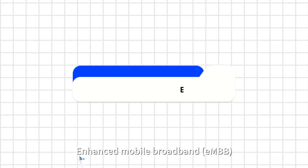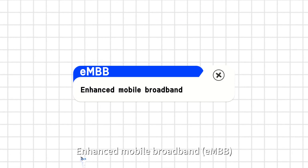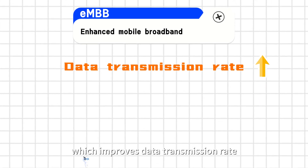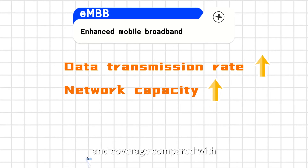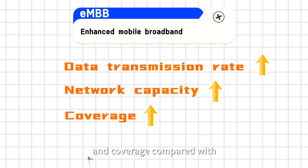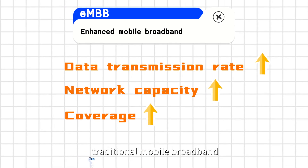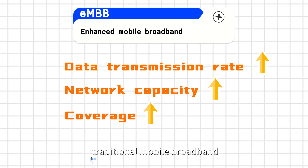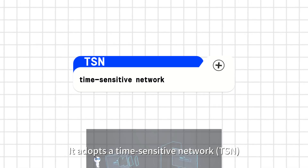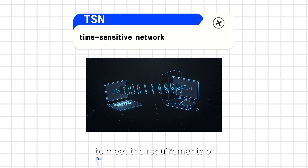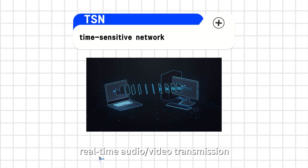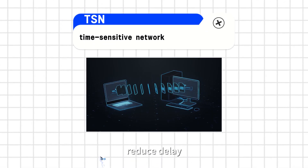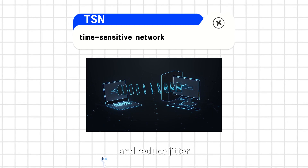Enhanced Mobile Broadband, EMBB, improves data transmission rate, network capacity, and coverage compared with traditional mobile broadband. It adopts a time-sensitive network, TSN, to meet the requirements of real-time audio, video transmission, reduced delay, and reduced jitter.